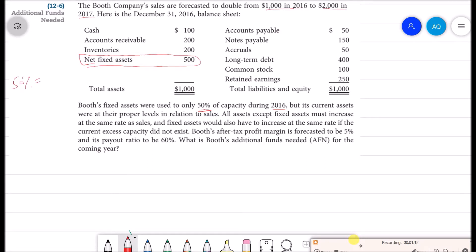At 50% capacity they are producing $1,000 of sales. But in 2017 we will need $2,000 of sales, and if we run this plant at 100% we can generate that kind of sales by using the same assets. So we don't need to increase any assets to produce sales of $2,000.